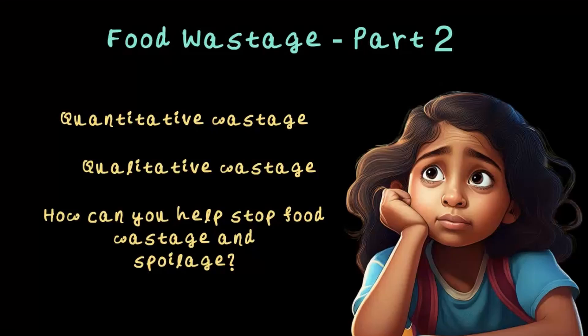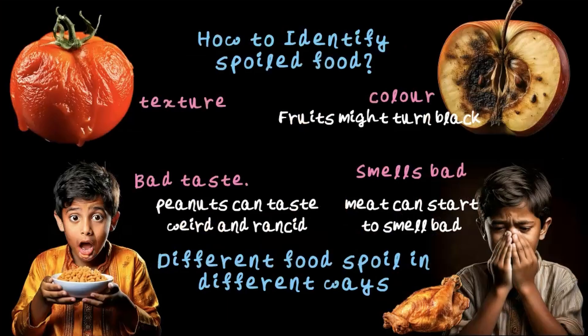Let's dive into the second part of this video. Before we begin, let's do a quick recap of what we covered in the first part about food wastage. We learned how to identify spoiled food — like color, texture, bad taste, and bad smell.